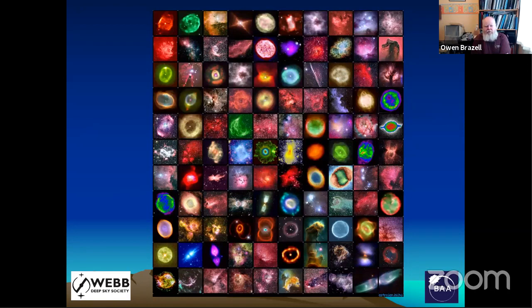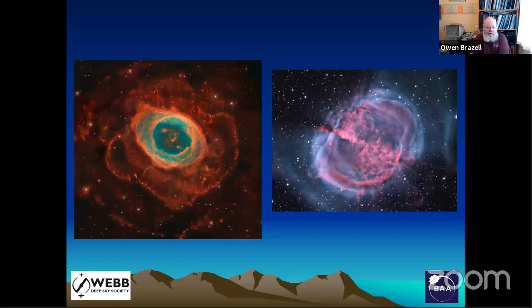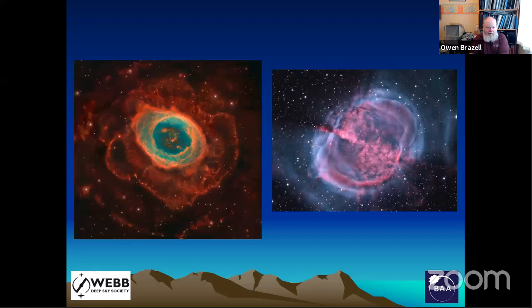Here we have a montage of images — not all obviously planetary nebulae — but giving a flavour of some of the different shapes they can take. Here we have some very deep images of M57 on the left and M27 on the right, which show that the area we normally see visually is only a small part of the nebula itself. This surrounding material is becoming more visible as we get deeper images and pick up some of the halos. This is another one — not M27 but known as MWP1 — showing a very similar form to M27.